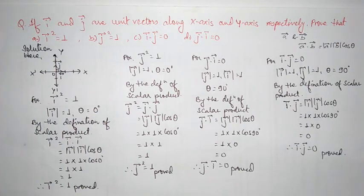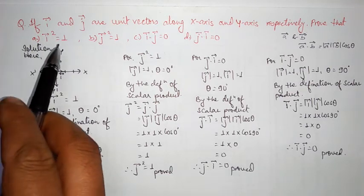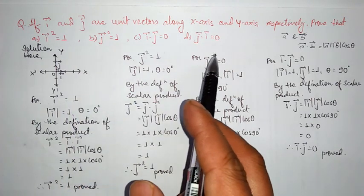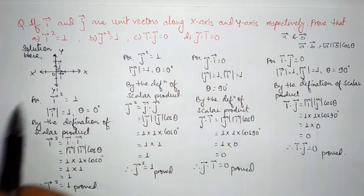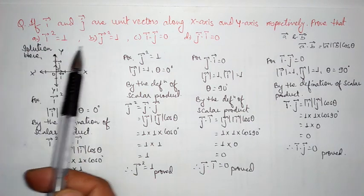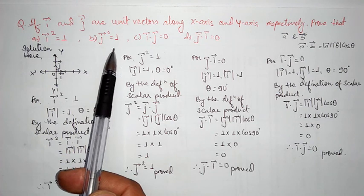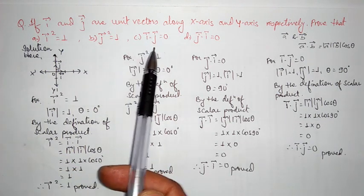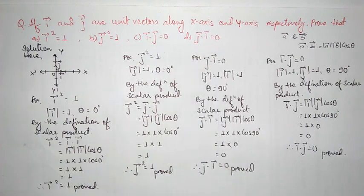In this way, for unit vector i along the x-axis and unit vector j along the y-axis, we have proved that i vector squared equals 1, j vector squared equals 1, i dot j equals 0, and j dot i equals 0. The scalar product of the same unit vector along the x-axis or y-axis is 1, and the scalar product of unit vectors along perpendicular axes is 0.